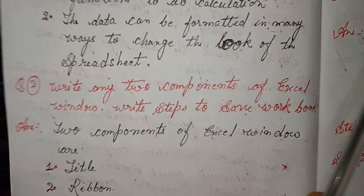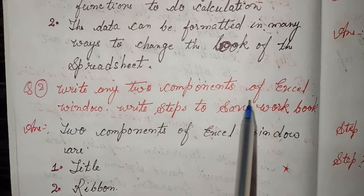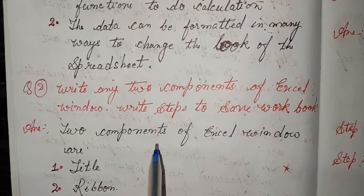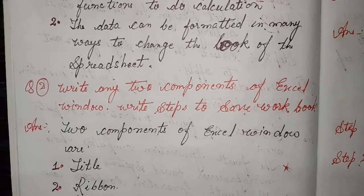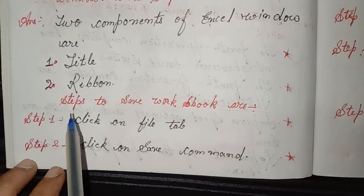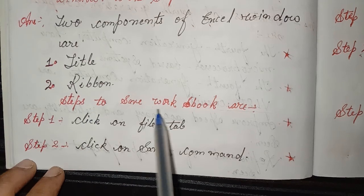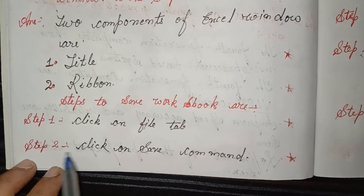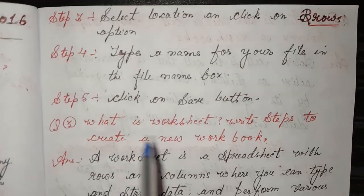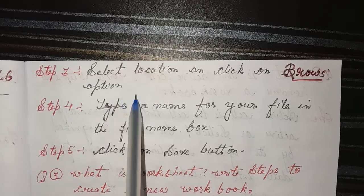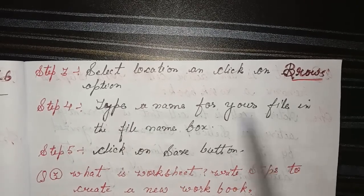Second question: Write any two components of the Excel window and write steps to save a workbook. Answer: Two components of the Excel window are — first, Title Bar; second, Ribbon. Steps to save a workbook: Step 1, click on the File tab; Step 2, click on the Save command; Step 3, select location and click on Browse; Step 4, type a name for your file in the File Name box.